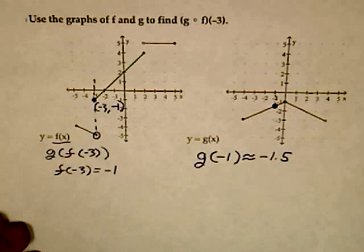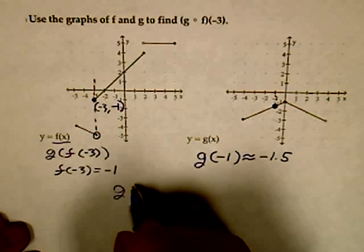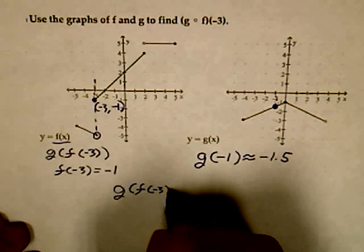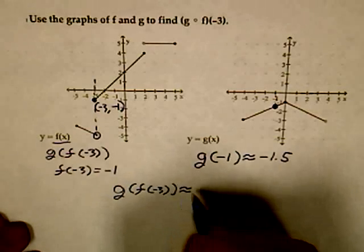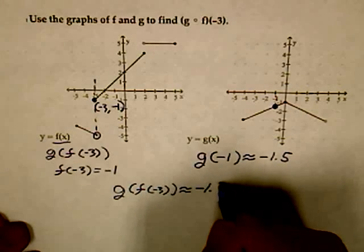So, final answer, g of f of negative 3 is about negative 1.5.